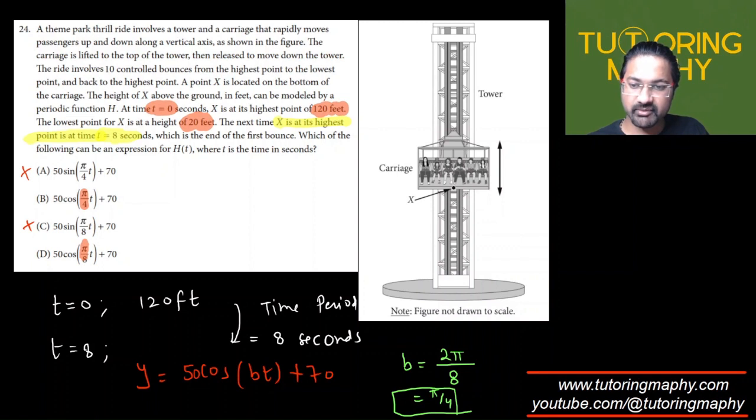If we substitute this, it will look like 50 cos(π/4 × t) + 70, and this is the final answer, which is option B.